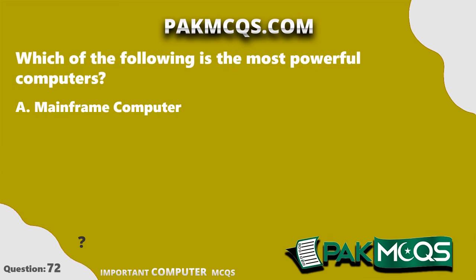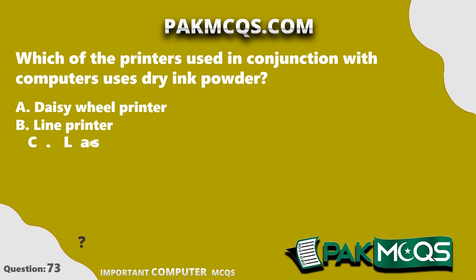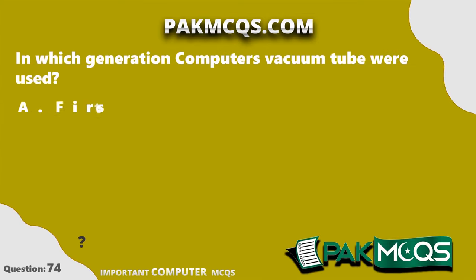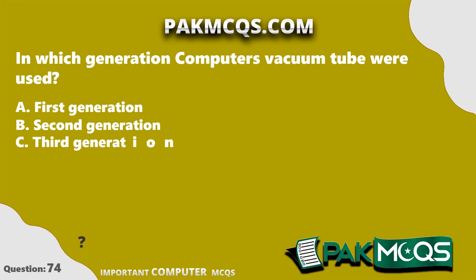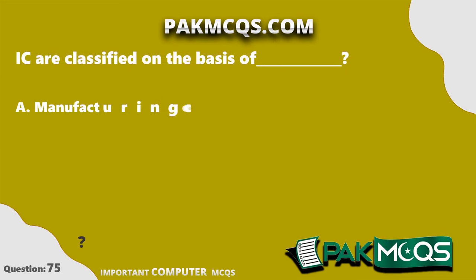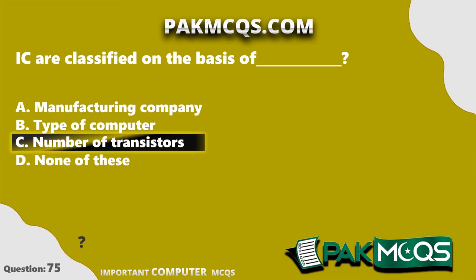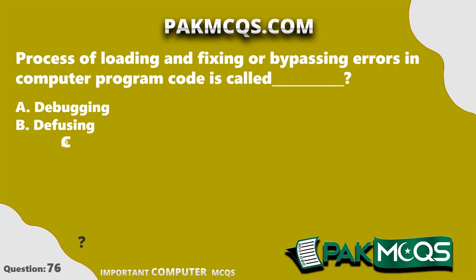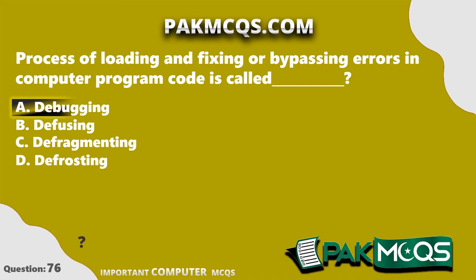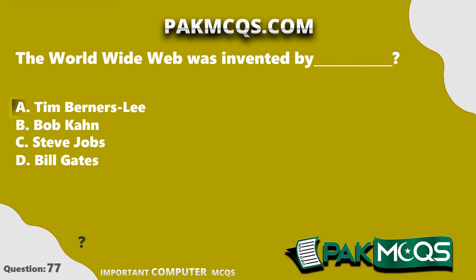Supercomputers are the most powerful computers. The laser printer uses dry ink powder in conjunction with computers. In the first generation of computers, vacuum tubes were used. ICs are classified on the basis of the number of transistors. The process of loading and fixing or bypassing errors in computer program code is called debugging. The World Wide Web was invented by Tim Berners-Lee.